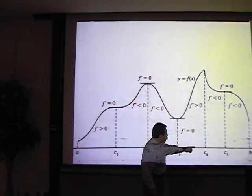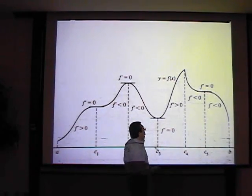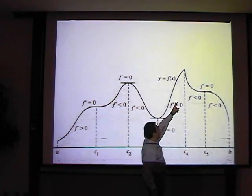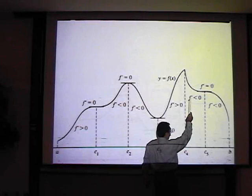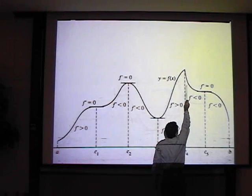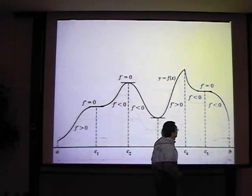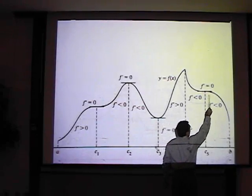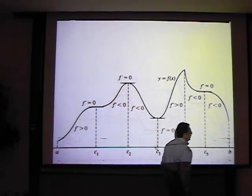From c3 to c4, function values are increasing and the slopes of the tangent lines are positive, until we reach c4 where the derivative does not exist — we have a vertical tangent there. From c4 to c5, function values are decreasing and the slopes of the tangent lines are negative. Then we reach a flat area where the slope equals zero, followed by function values decreasing all the way to b with negative tangent slopes.